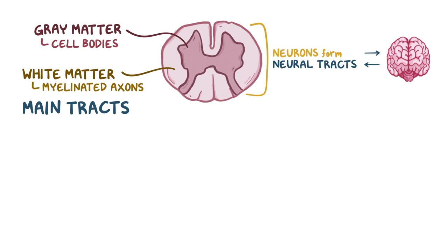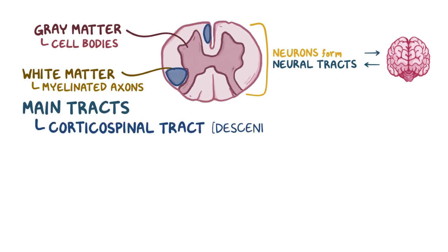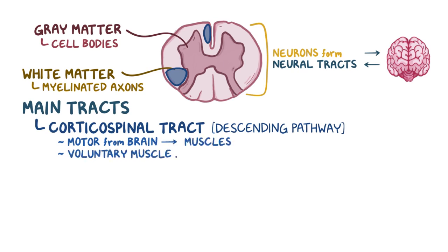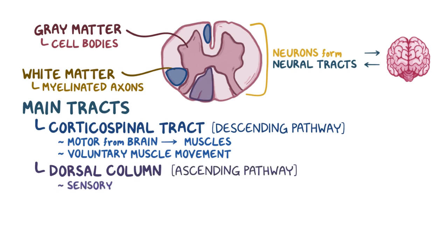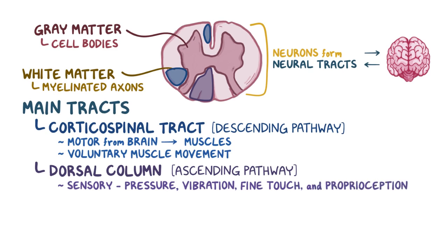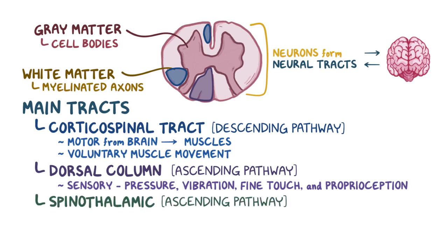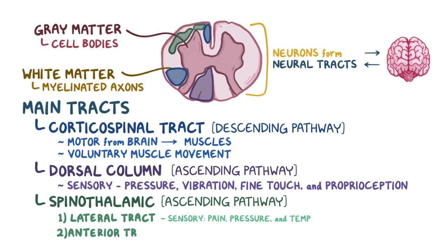There are three main tracts to remember. The corticospinal tract is a descending pathway that carries motor information from the brain to different muscles in the body and controls voluntary muscle movement. The dorsal column is an ascending pathway that carries sensory information about pressure, vibration, fine touch, and proprioception — the awareness of one's bodily position in space. Finally, the spinothalamic tract is another ascending pathway divided into two parts: the lateral tract carries sensory information for pain, pressure, and temperature, while the anterior tract carries information for crude touch — the sense that one has been touched but without being able to localize where.